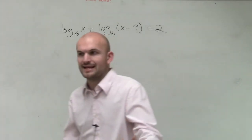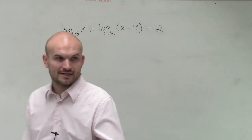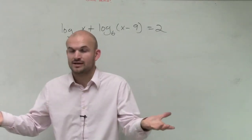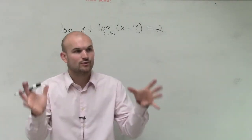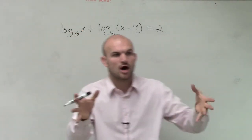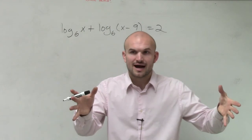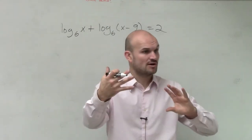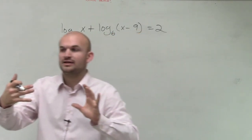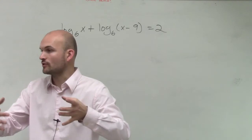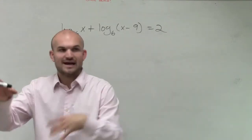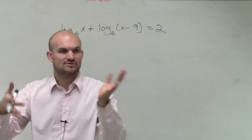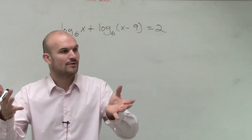One thing I would automatically look at is that so far we've learned two different methods. If I had an equation with one logarithm, I could transfer it to exponential form. And when I had an equation with two logarithms, we made sure that both logarithms were on both sides of the equation, and then I was able to cancel them out.